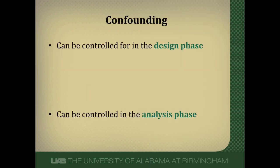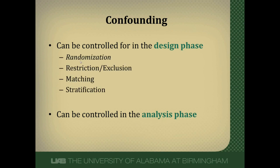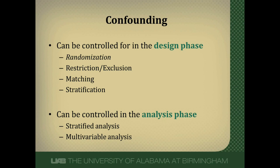Confounding can be controlled for in either the design phase of a study, which is what we're going to focus on in the remainder of this video, or in the analysis phase. There are four ways to control for confounding in the design phase, which we'll go through individually. In the analysis phase, multivariable analysis is largely used — I have a previous video on this, and other resources are available online.